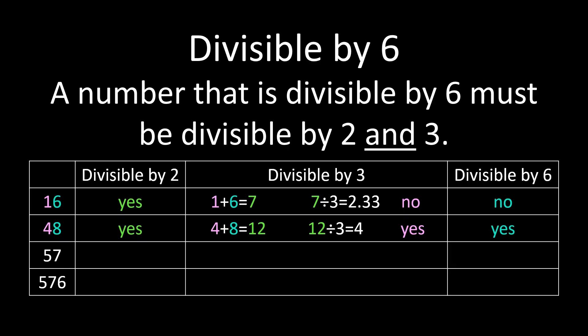With 57, we're looking at the final digit, which is a 7. 7 is an odd number, making 57 an odd number, not divisible by 2. And just for the sake of an example, let's go ahead and run our test for divisibility by 3, even though we already know if it's not divisible by 2, it can't be divisible by 6. So we would be adding 5 and 7, and we get 12. 12 is divisible by 3, so 57 is divisible by 3. But because it's not divisible by 2, 57 is not divisible by 6.